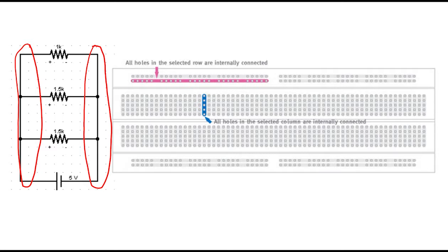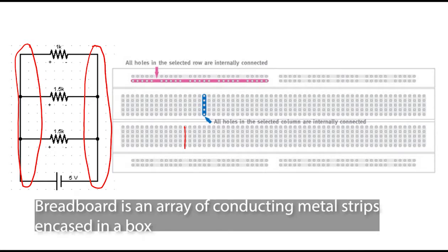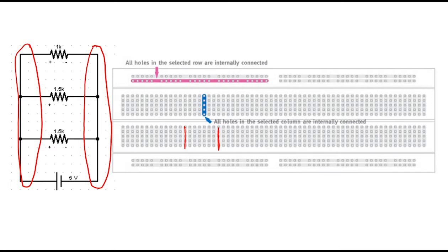So given that in our breadboard, this refers to one conducting material connected internally. What we can do is connect the ends of our resistor along this point. I can place my first resistor here, then my second resistor, then my third resistor here. That's very easy.